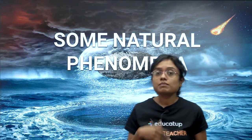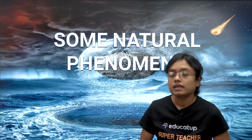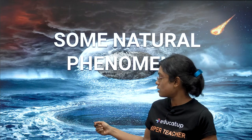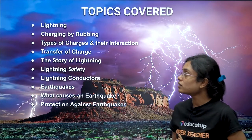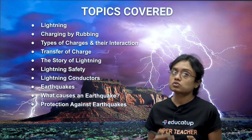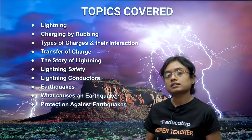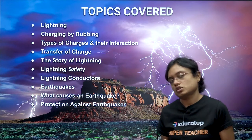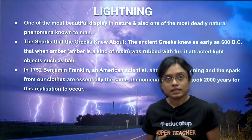Yes, some things which happen naturally and are not under human control — that is what we are going to discuss. The topics are: lightning, charging by rubbing, types of charges and their interaction, transfer of charge, the story of lightning, lightning safety, lightning conductors, earthquake, what causes an earthquake, and protection against earthquake.